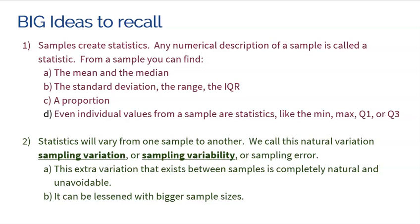So not only are the giraffes in our sample going to vary, but also the sample, my sample compared to somebody else's sample are also going to vary. So this natural variation that exists between samples is called sampling variation, sampling variability, or again, you will see some people call it sampling error.